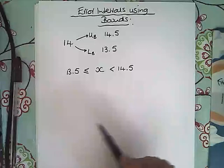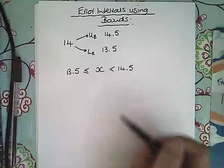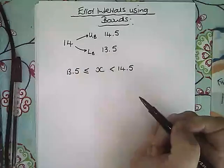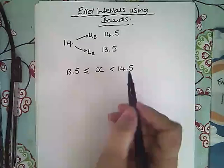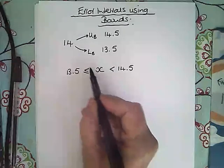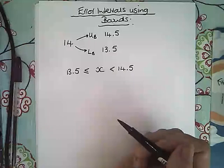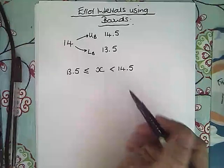However, it can go right up to 14.499999. And that's how we use this inequality sign here. We use the lower bound and we use the upper bound. The value you are given can equal the lower bound, but it can't equal the upper bound. It's slightly less than the upper bound. And this is how we write an error interval.